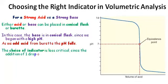The choice of indicator is less critical since one drop of acid will cause the pH to drop sharply from 10 down to 3.